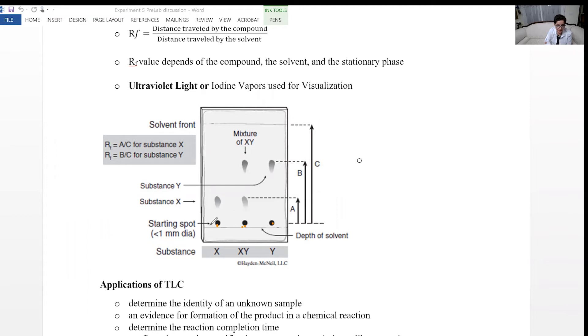After you put your sample on the plate, then you are going to place it in developing chamber where you have the solvent. The plate should be inside the liquid. But the level of the liquid should be below the level of the sample. Otherwise, the sample is going to be washed down.